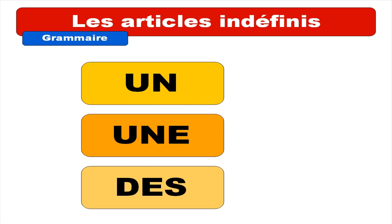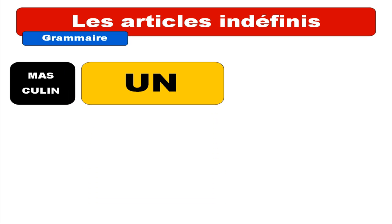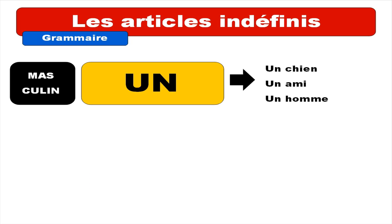Les articles indéfinis: we've got the masculine form, it's 'un'; the feminine form, it's 'une'; and the plural form, it's 'des'. Let's start with the masculine one — masculine is 'un'. For example: un chien.